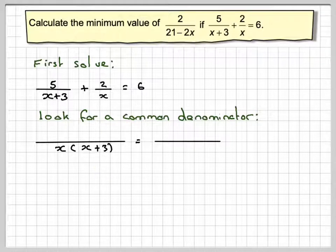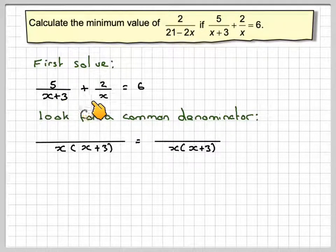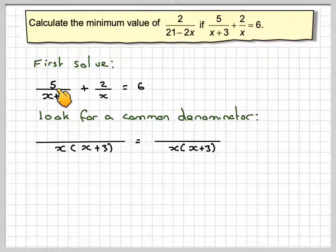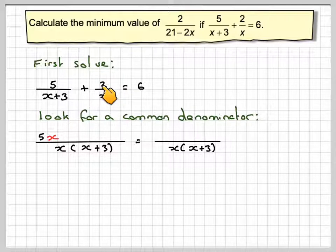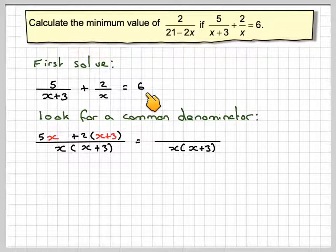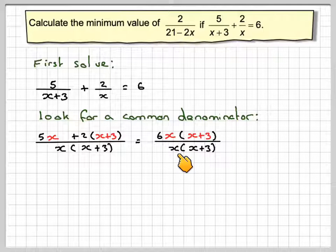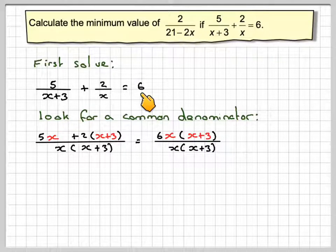So this will be over x plus 3 for this bit here and for this bit here as well. So here we have to multiply this x plus 3 by x so we need to do the same to 5. So here we get 5x. For the 2, this x has been multiplied by x plus 3, so we'll need to multiply the 2 by x plus 3. The 6 will have to be multiplied by x times x plus 3. If you think about it, all that will be cancelled out to leave 6.